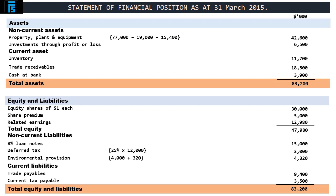Current assets begin with inventory, which is sitting in the trial balance as a debit of $11,700. Next come trade receivables, with a carrying amount of $18,500. And finally, cash deposited at the bank, which equals $3,900. Overall, current assets come in at $34,100, making the assets total $83,200.